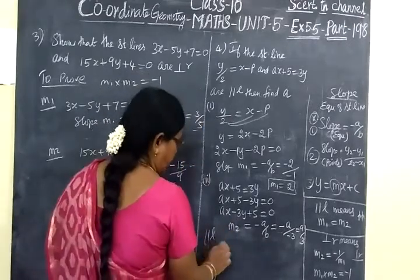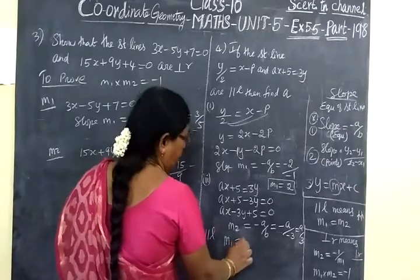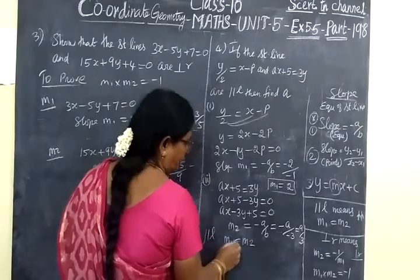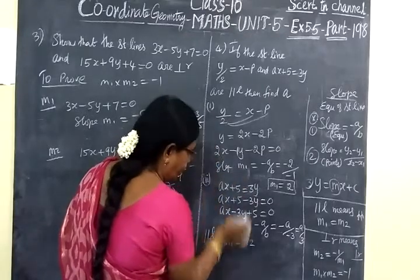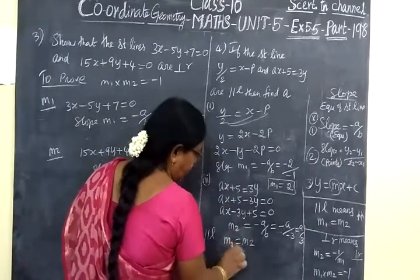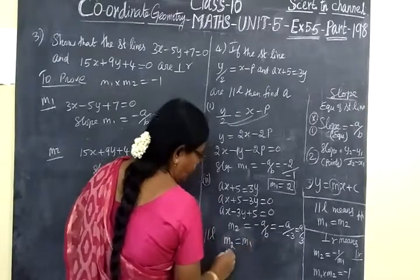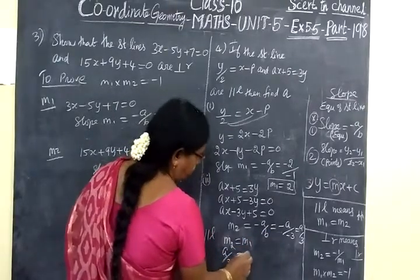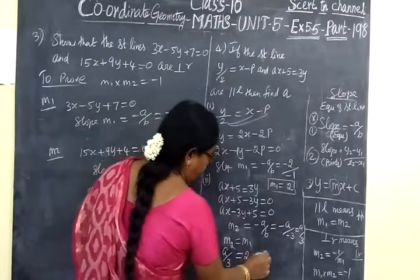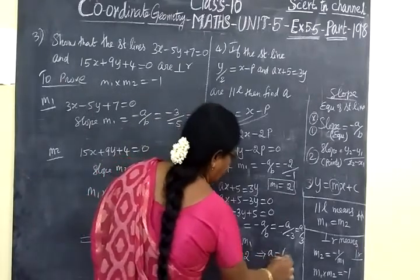Given they are parallel, M1 equal to M2. M1 is 2, M2 is A by 3. So A by 3 equal to 2, which implies A equal to 6.